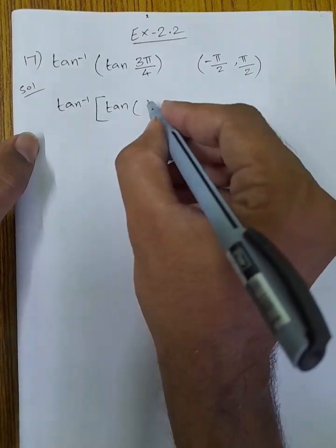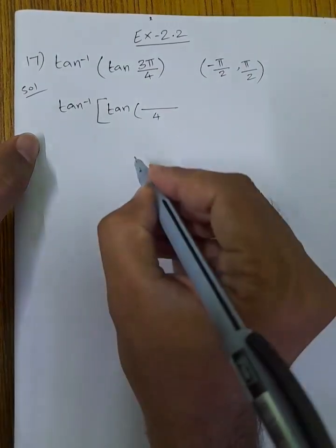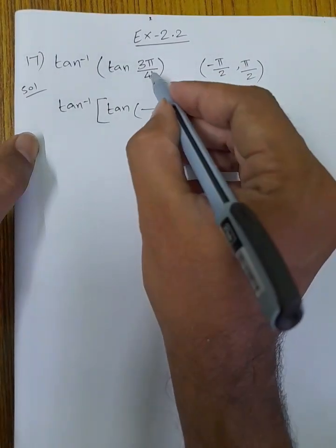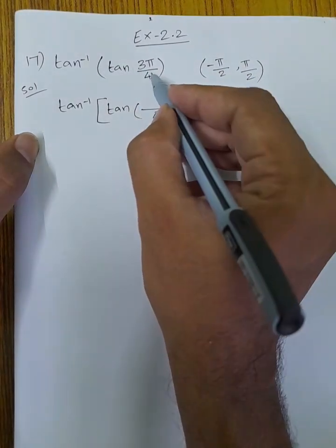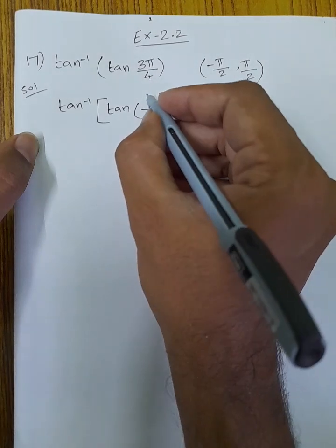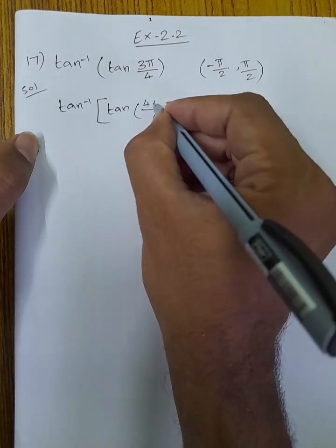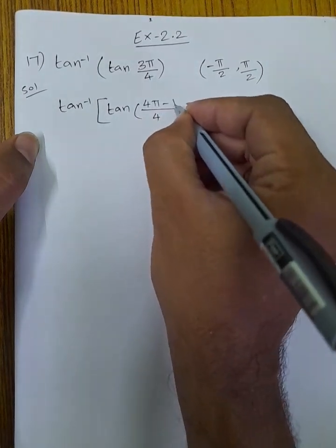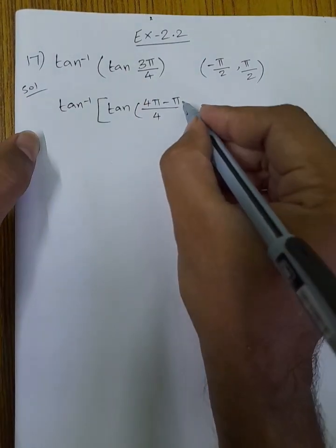The denominator is 4, and the same thing is 4. So this is how we cross multiply. We get 4π minus π — that is how we get it.